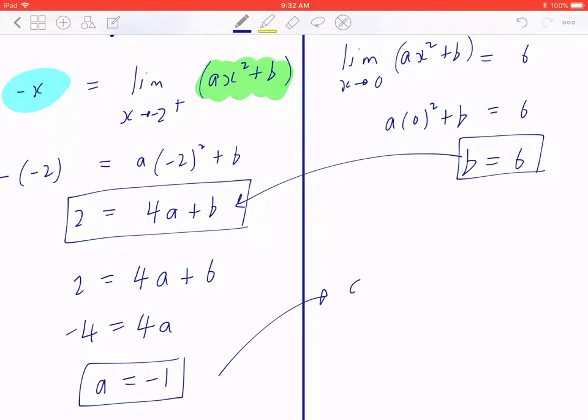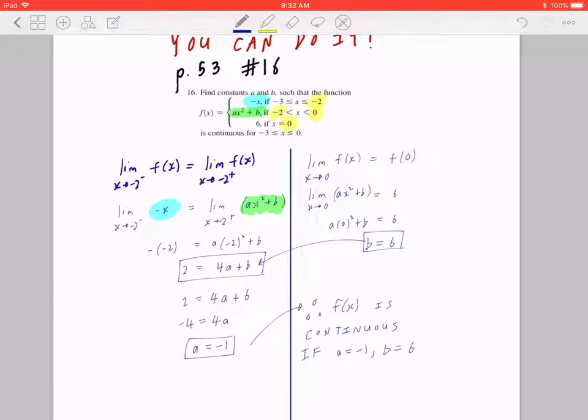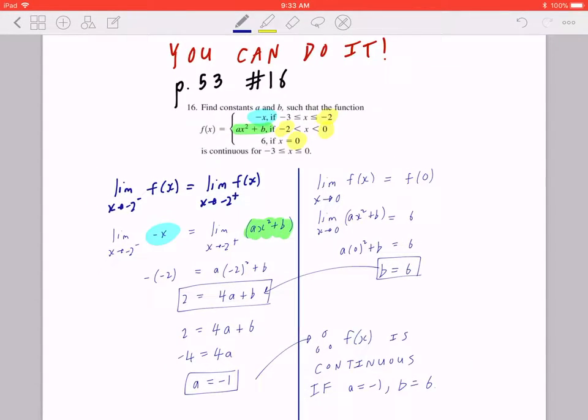So now, you can say that, therefore, f of x is continuous if a is negative 1 and b equals 6. I hope this makes sense.